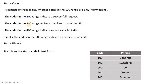In the 300 range — from 300 up to 399 — the status code means the client is redirected to another URL. If the code is in the 400 range, it indicates a client-side error. In the 500 range, the error is on the server side.